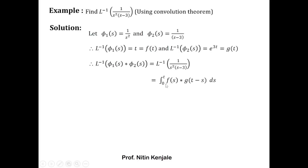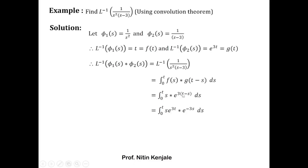We now apply the convolution theorem: the inverse Laplace transform of φ1(s)·φ2(s) is the integral from 0 to t of f(s)·g(t−s) ds. Substituting f(s) = s and g(t−s) = e^(3(t−s)), we get the integral from 0 to t of s·e^(3(t−s)) ds. Expanding the exponential term, this becomes the integral of s·e^(3t)·e^(−3s) ds.